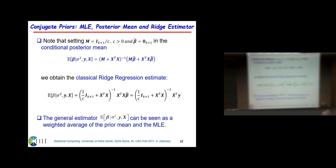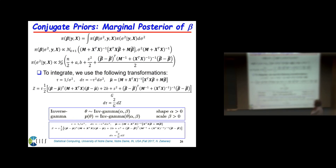If you take the prior mean to be zero and M equal to (1/C) times the identity matrix, the conditional mean of beta given sigma squared becomes (X^T X + (1/C) I)^{-1} X^T Y, which is exactly ridge regression. This is what statisticians call ridge regression in linear algebra.